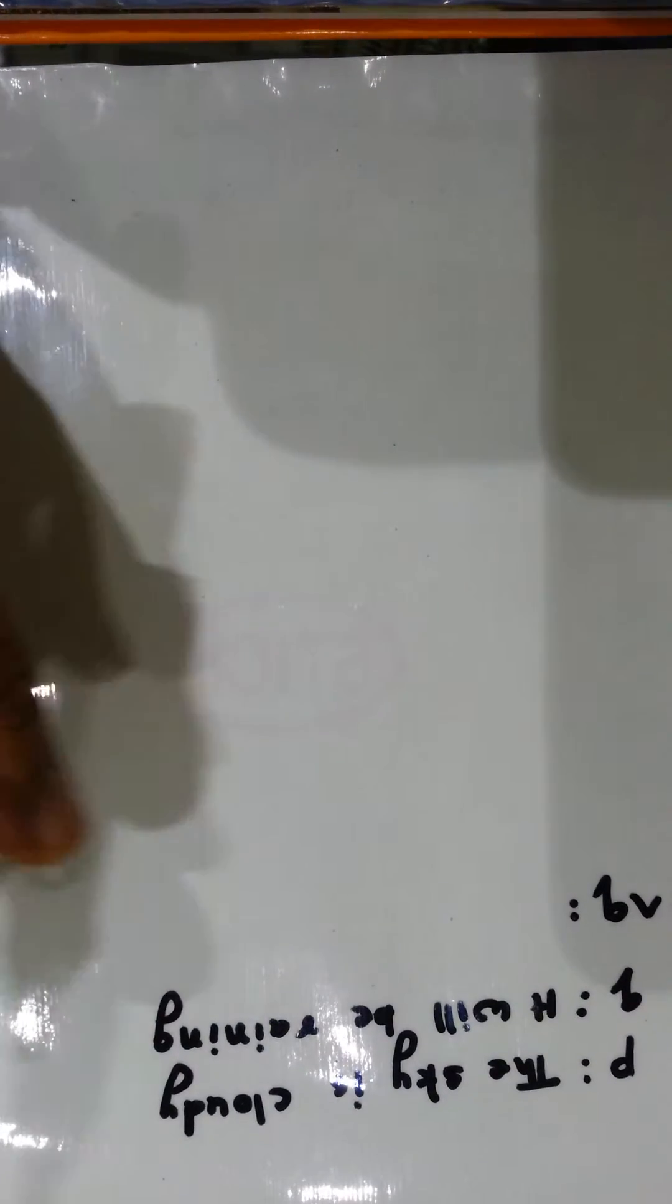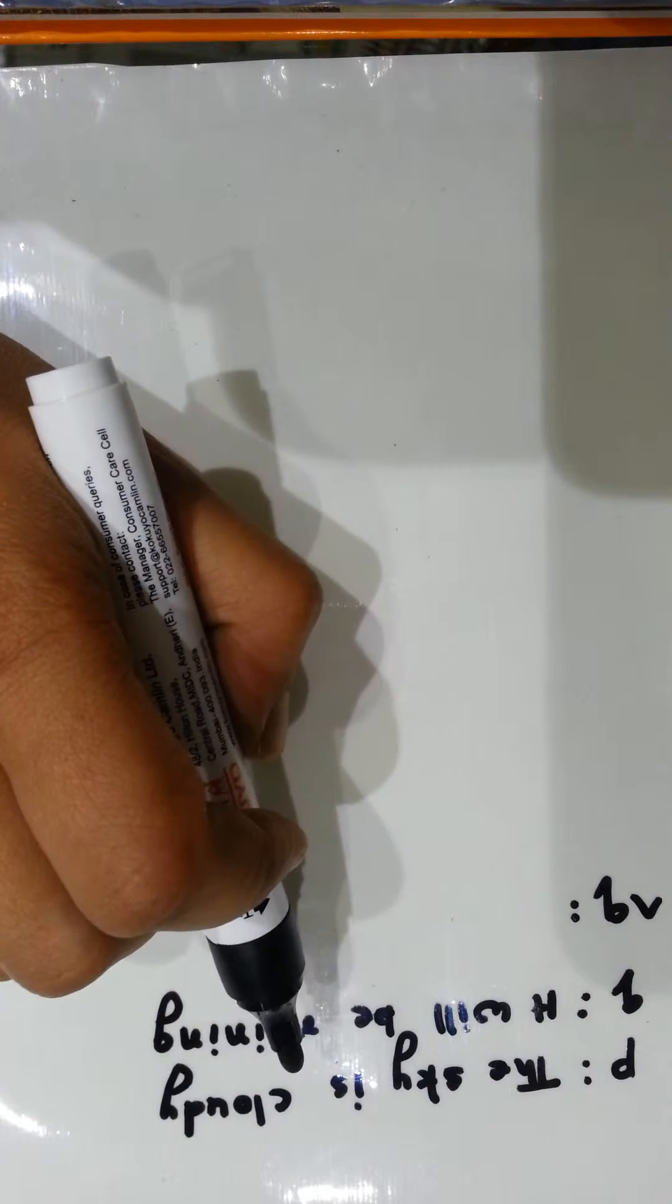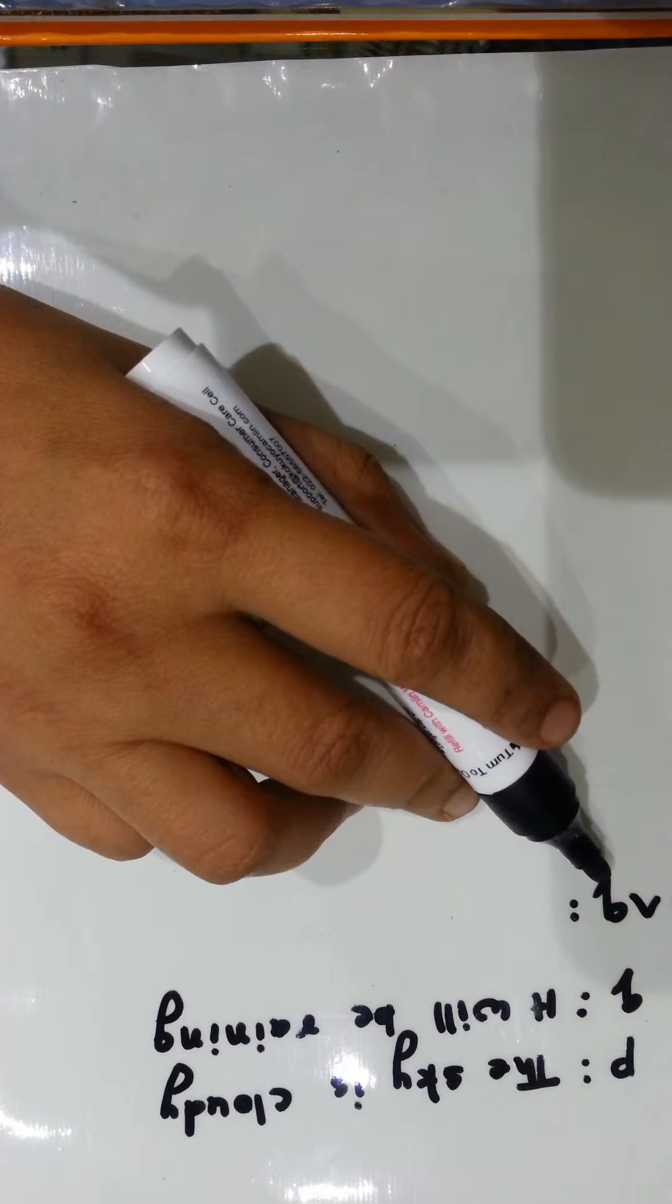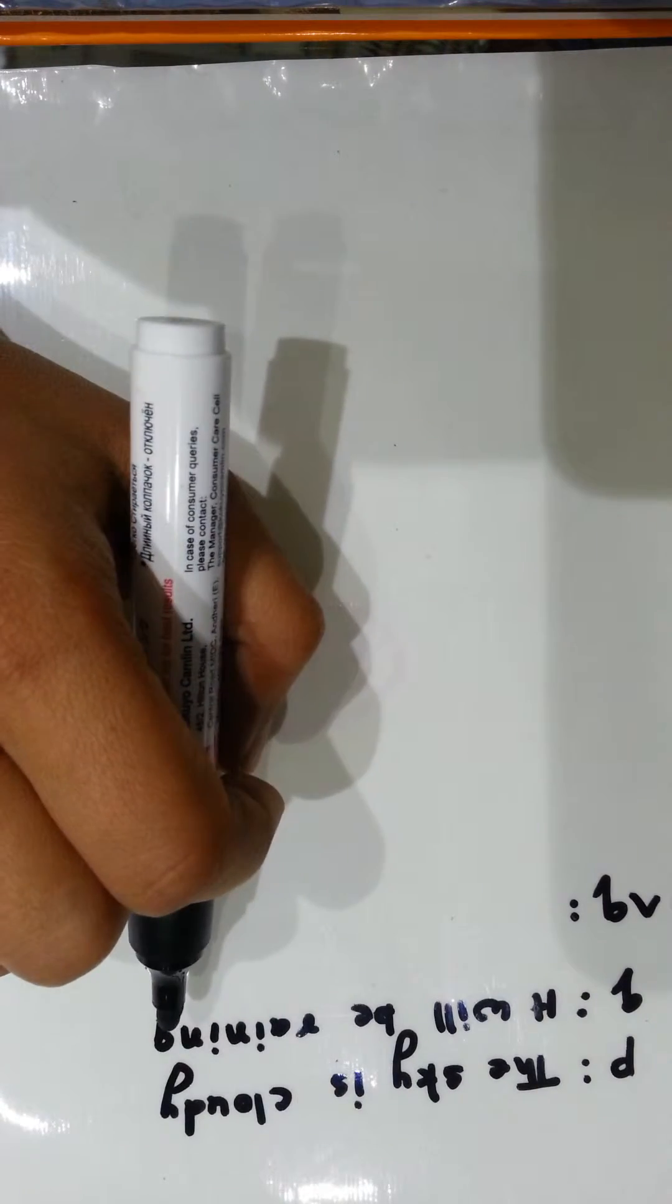Let us see one example. P is 'the sky is cloudy', Q is 'it will be raining'. What will be P and Q? It will be 'the sky is cloudy and it will be raining'.